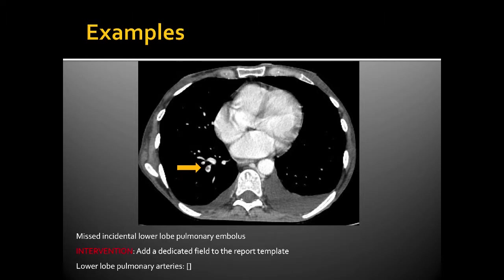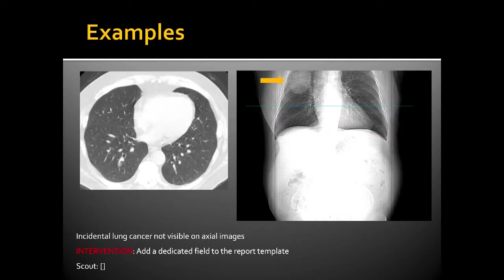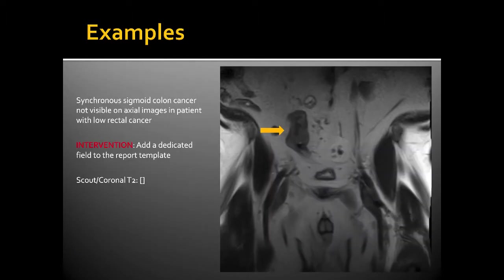Approximately 10% of cancer patients have incidental pulmonary emboli, and approximately 9% of inpatients have incidental pulmonary emboli. Here's an example of a patient who had a CT scan to evaluate a renal mass. In this case, there is a large right upper lobe lung cancer seen only on the SCOUT view and not visible on any of the axial images. The intervention: add a dedicated field to the report template that says 'SCOUT' with a blank.